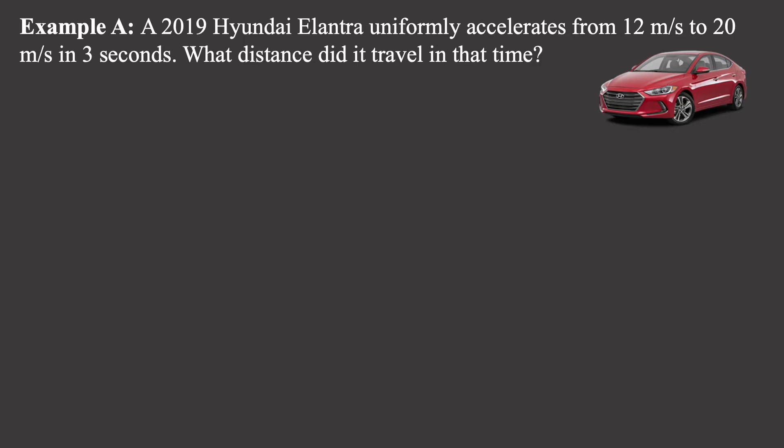Here's a sample question about an object in motion. A 2019 Hyundai Elantra uniformly accelerates — constant acceleration — from 12 meters per second to 20 meters per second in a span of three seconds. What distance did it travel in that time? The first step is to write down the givens as you read through the question. It accelerates from 12, so that's vi; to 20, that's vf; and 3 seconds, that's delta t.